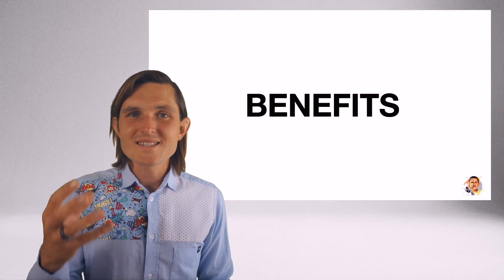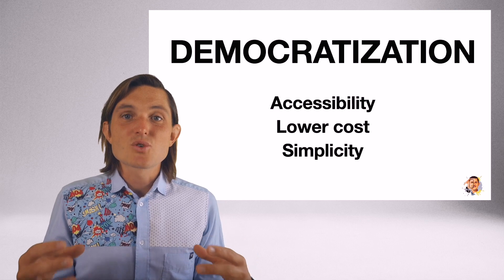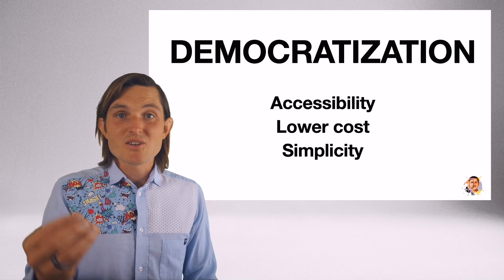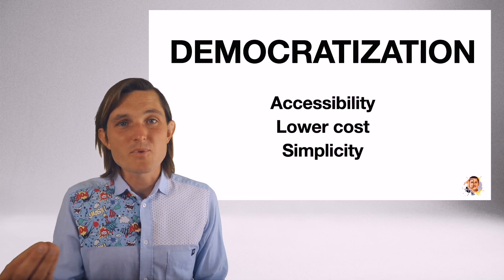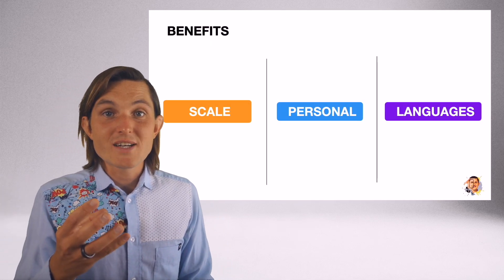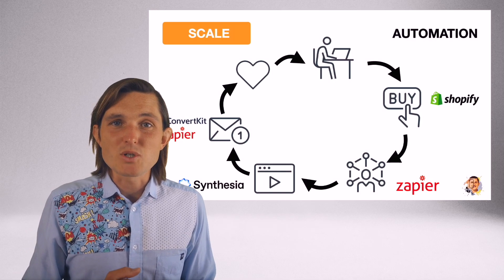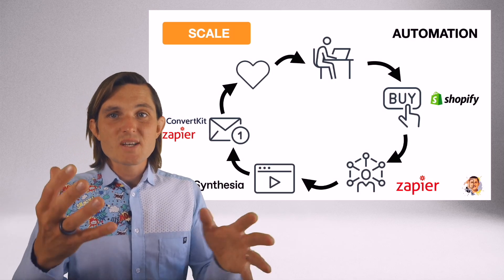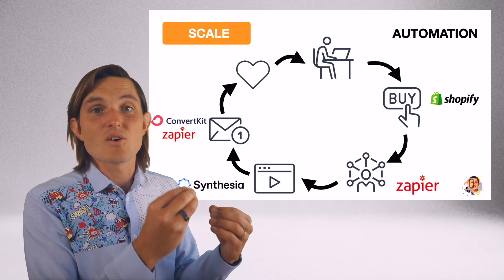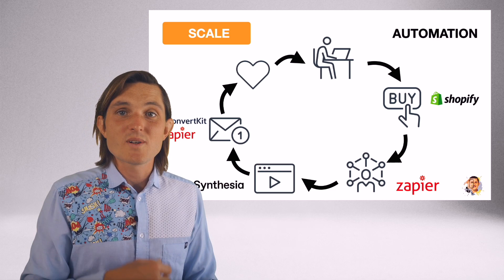What are the benefits? Number one is democratization — you're giving the ability to create videos to everybody. You don't need a camera, it's accessible to everyone, it's much lower cost because you don't need to invest in equipment, and it's much simpler. Content creation now drives scale, it's much more personal, and it helps you reach more people by sharing content in more languages. Number one is scale through automation: if somebody purchases something on your website, you can trigger it automatically through Zapier to go through Synthesia or Windsor, triggering that personalized email to drive customer love and repeat purchases.